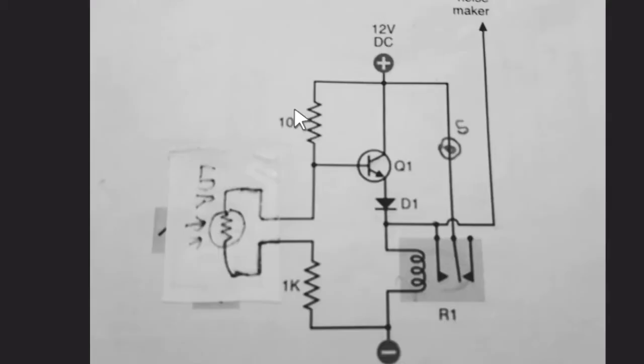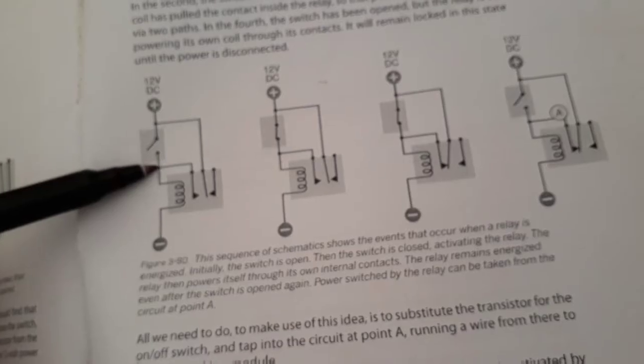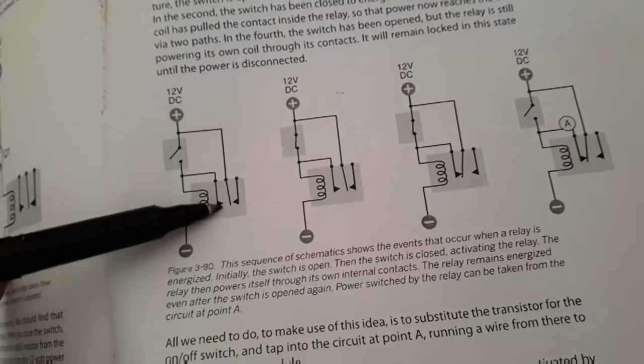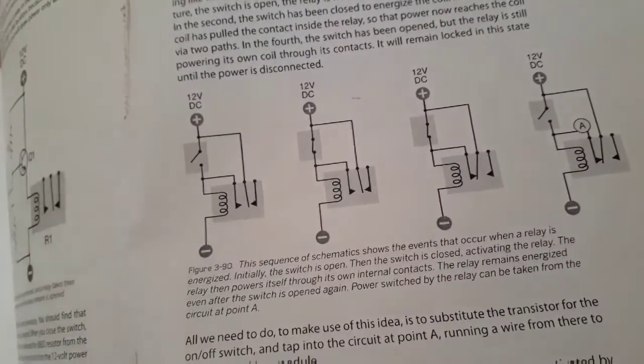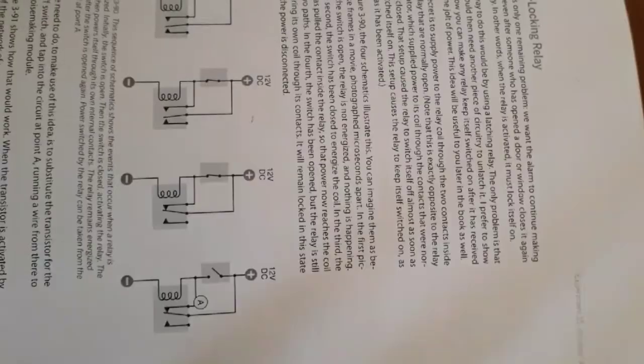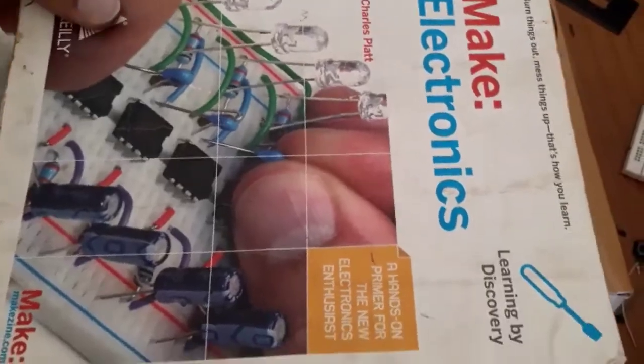Here is the circuit diagram. We need 12 volt DC and a BC 507 transistor. The base goes to this LDR, the light dependent resistor, and from there to the 12 volt DC relay. Here is the self-locking relay mechanism with a reset button switch. These are the different conditions when voltage is applied. You can find this book online, the link is in the description.